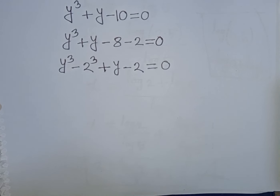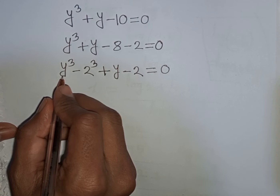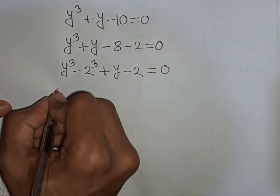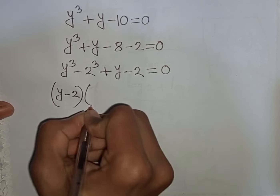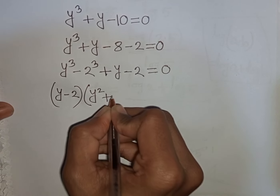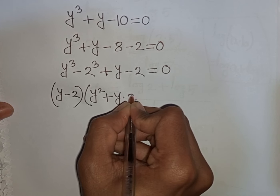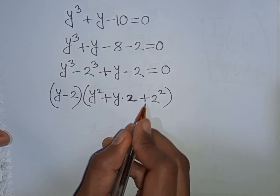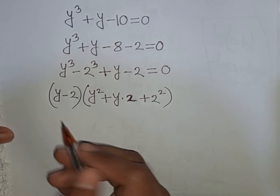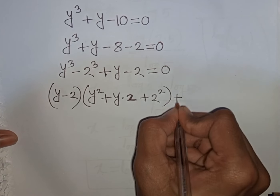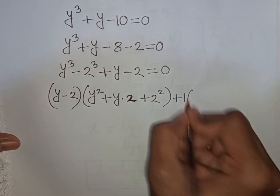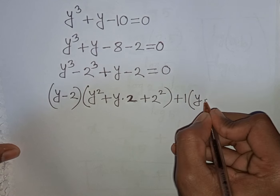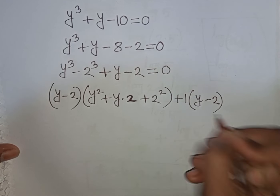Here we apply the formula a cubed minus b cubed, where a is y and b is 2. According to the formula, we write (y minus 2)(y squared plus 2y plus 4). This is the formula a minus b times a squared plus ab plus b squared. Then for the remaining terms, we take plus 1 as a common factor out of the bracket, giving plus 1 times (y minus 2), all equal to 0.